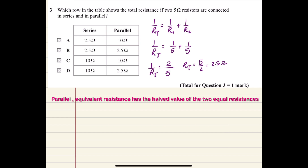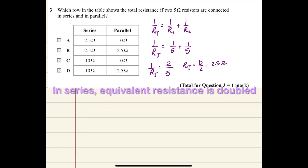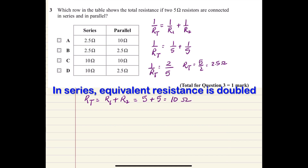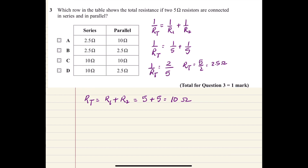For a series connection, R total equals R1 plus R2, so five plus five equals 10 ohms. The correct answer for question three is D.